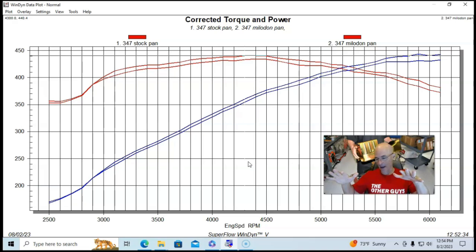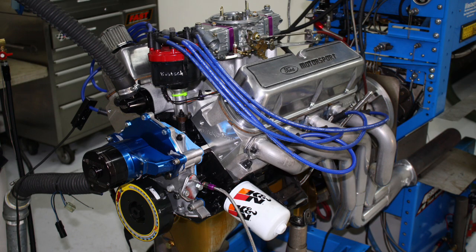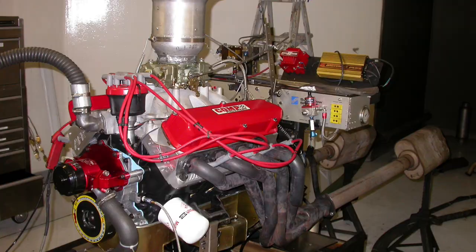What happens is the pan and the windage tray, the kick out pan, the pan design stuff become even more beneficial when the engine is moving around as it is out in the real world. But even on the dyno here in a stationary event, we saw some pretty good power gains. Now let's take a look. This was on a 347. Let's check out the larger 427.